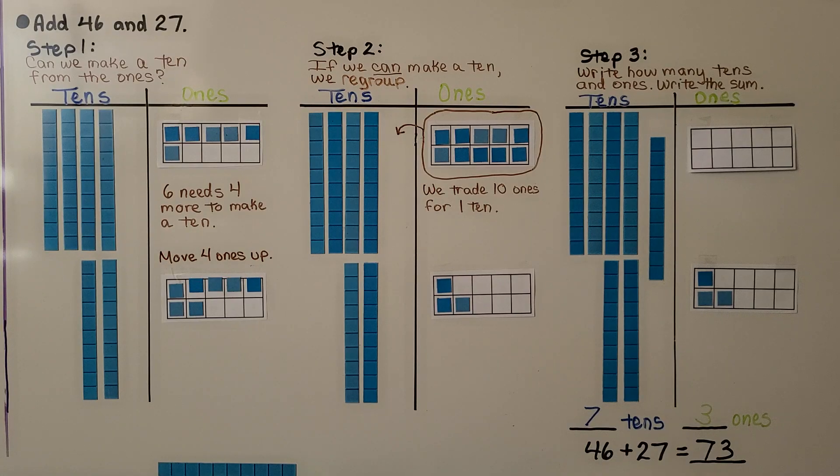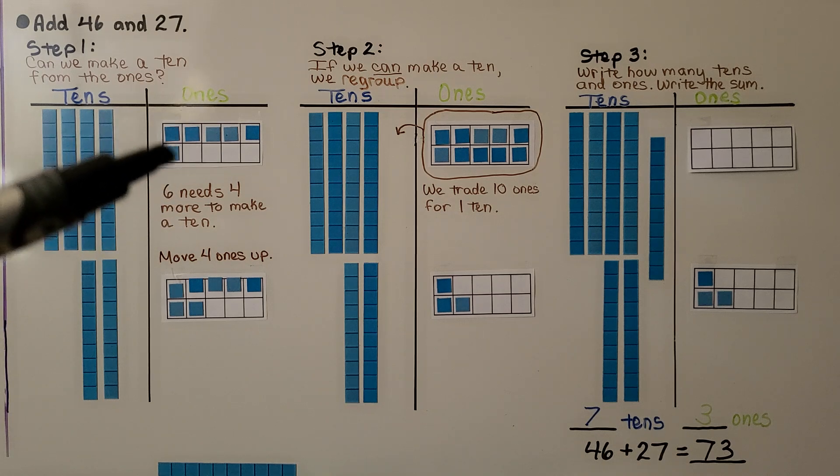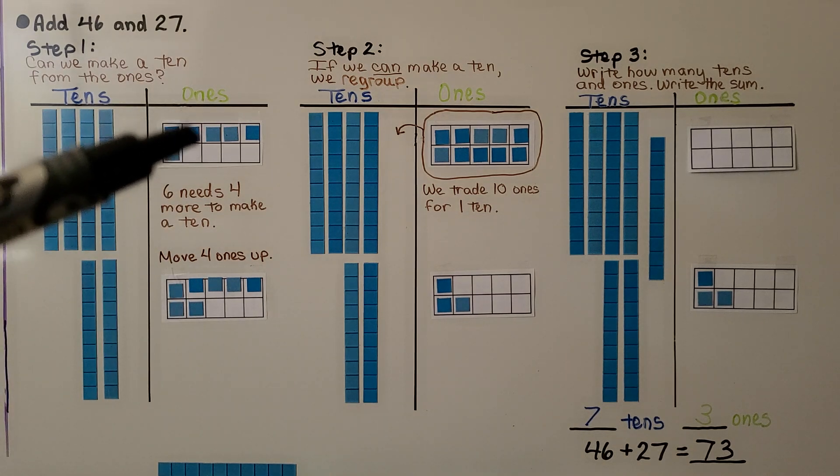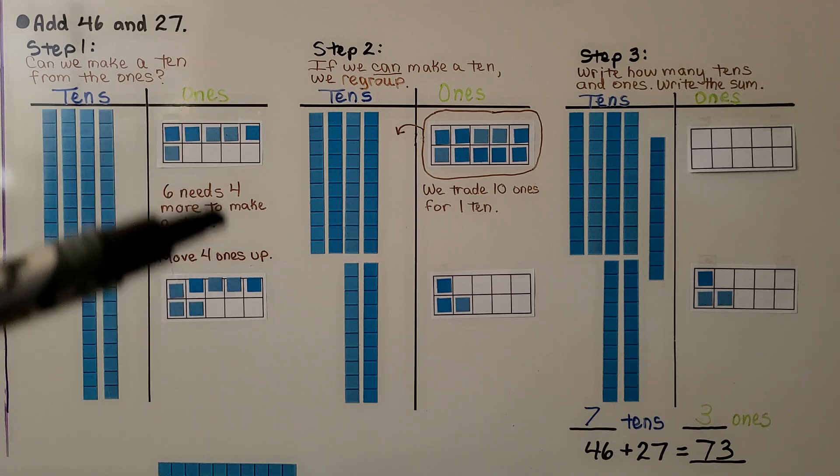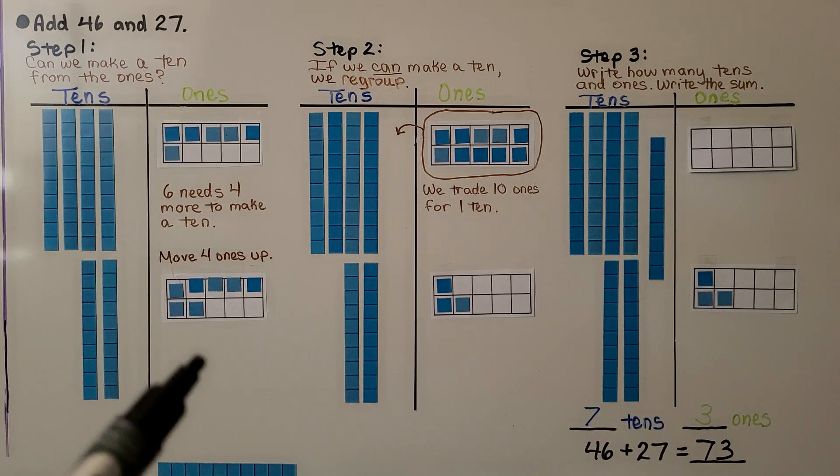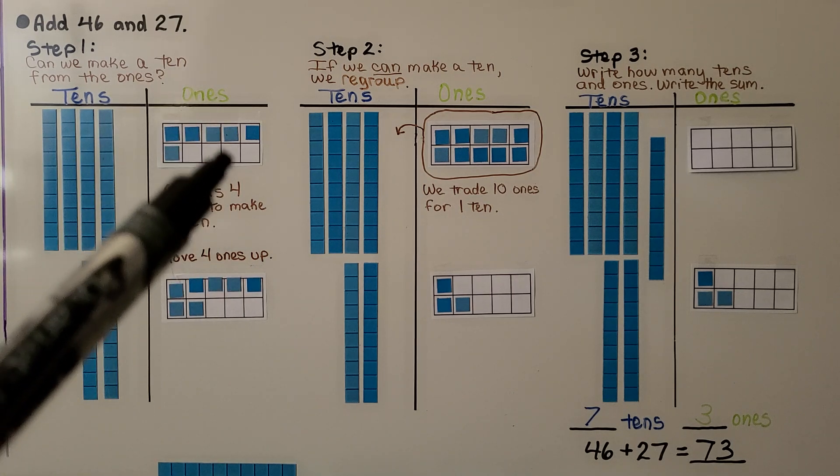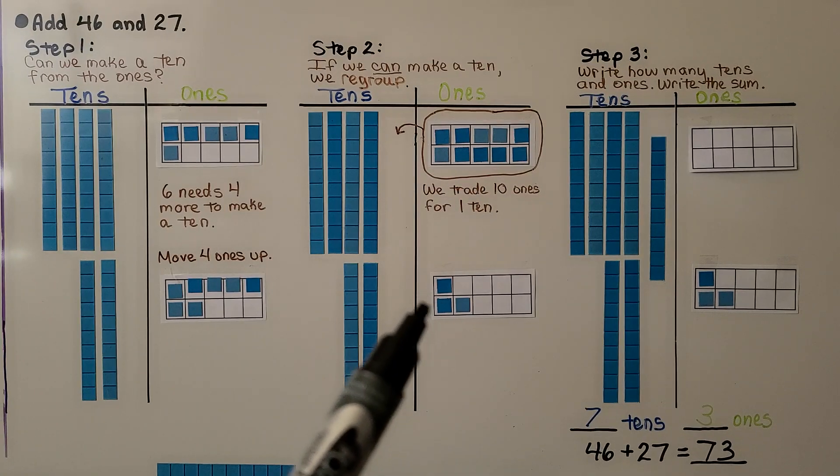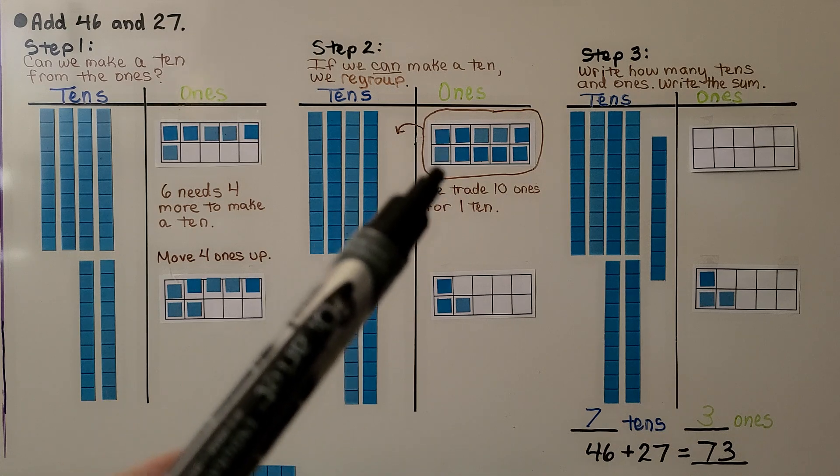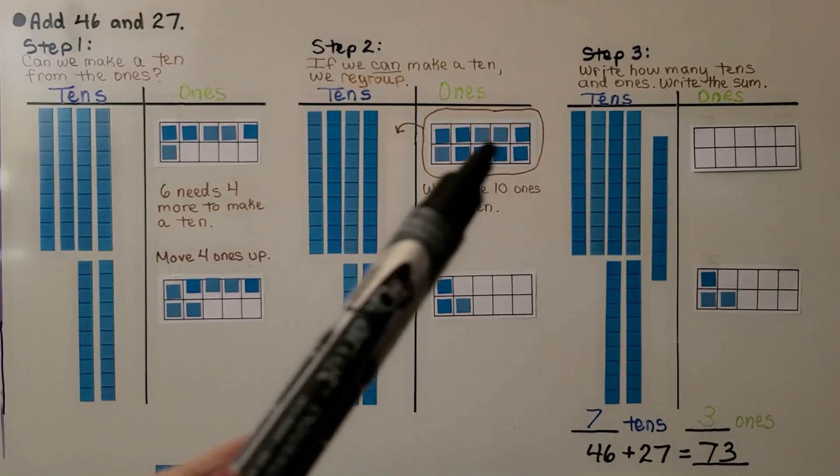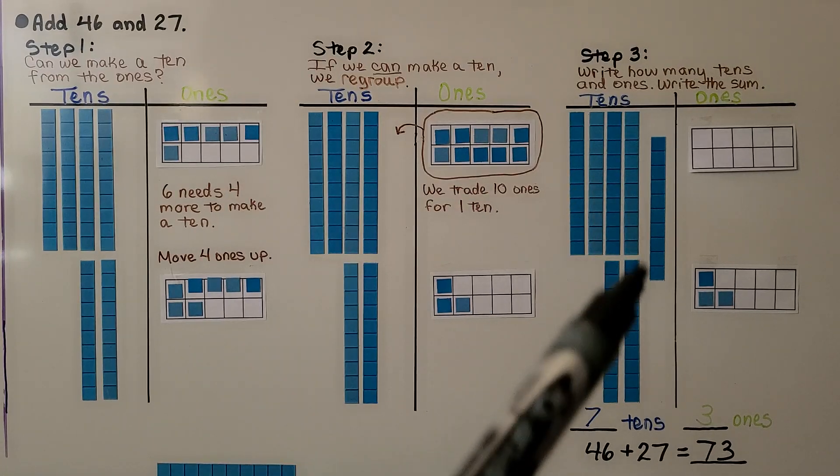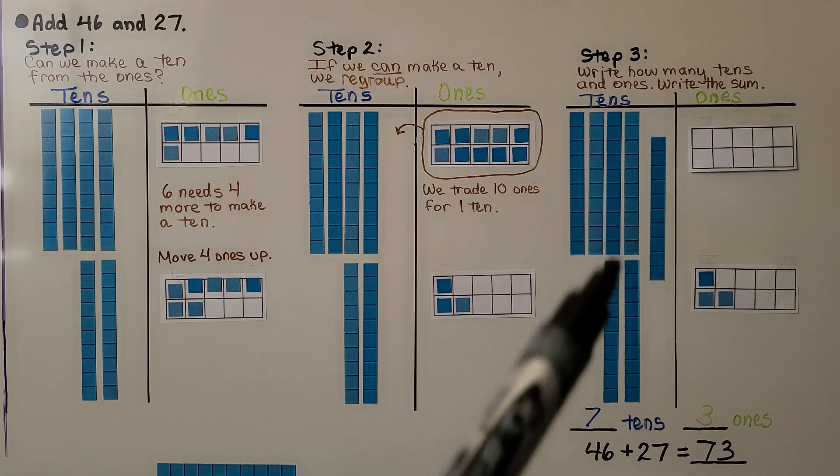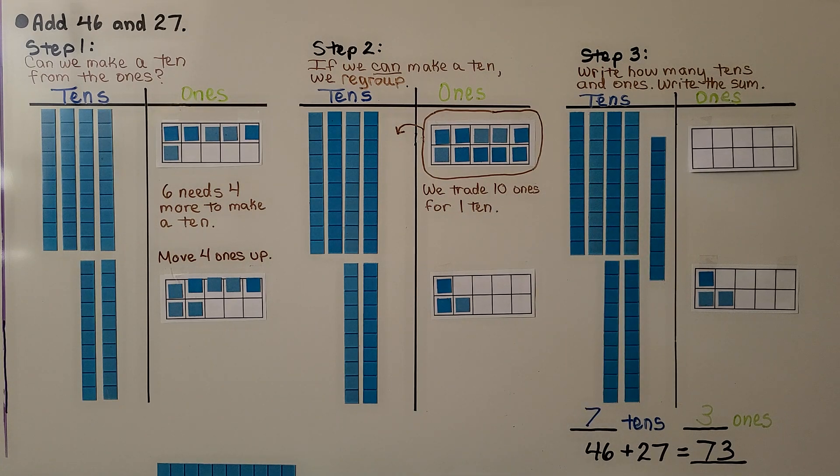The first thing we did was we figured out how many ones needed to go up here to make a ten. We needed to put four of them. We moved these four up. Now it looks like this. We have a ten and three ones left down here. We trade the ten ones for a ten. Now these are gone and we have a ten here. And now we count how many tens and how many ones we have. We have seven tens, three ones, that's seventy-three.